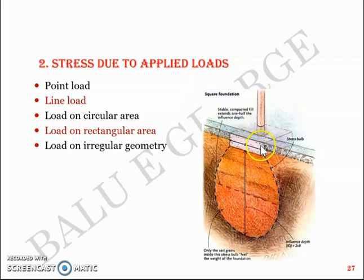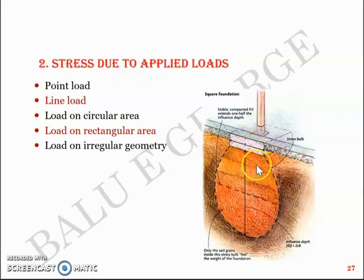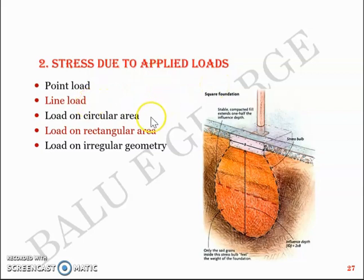This picture shows how soil gets stressed when a load is applied from a foundation. The superstructure transfers load to the footing, and the footing transfers the load to the soil. The portion we call the influence bulb is the zone in which the soil is stressed. Stress due to applied loads in general can be due to a point load, a line load, a circular area, a rectangular area, or an irregular geometry.